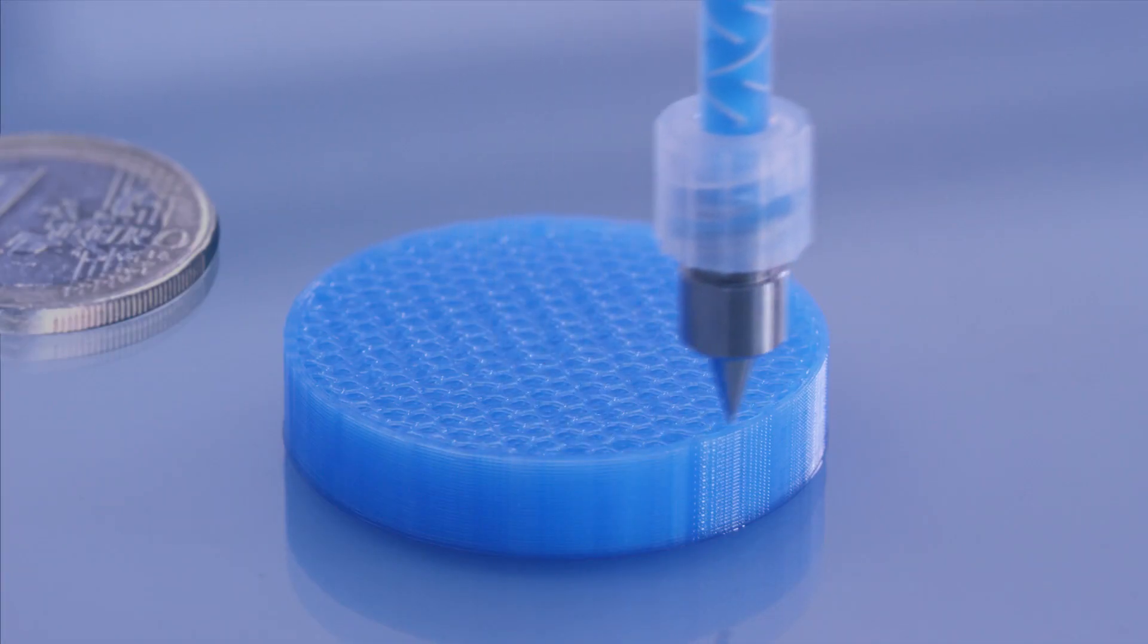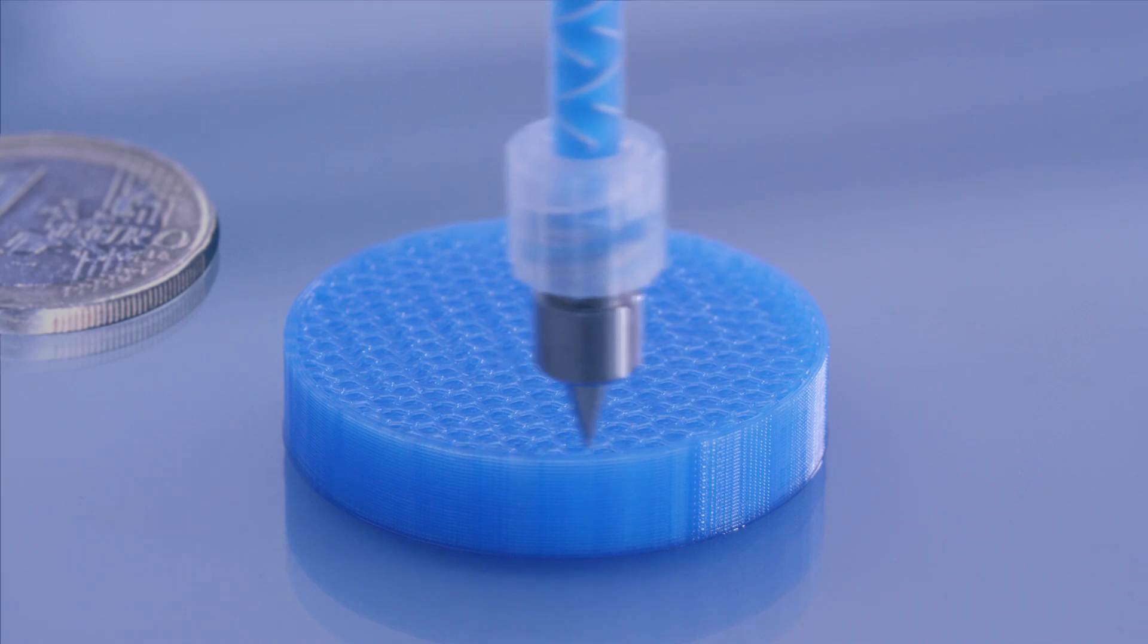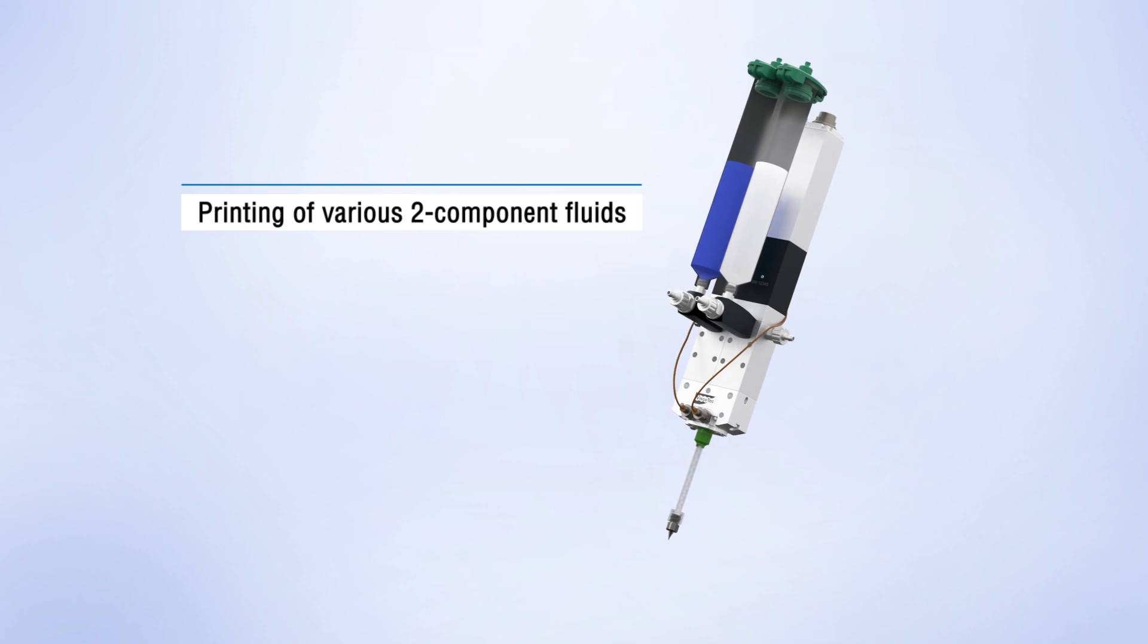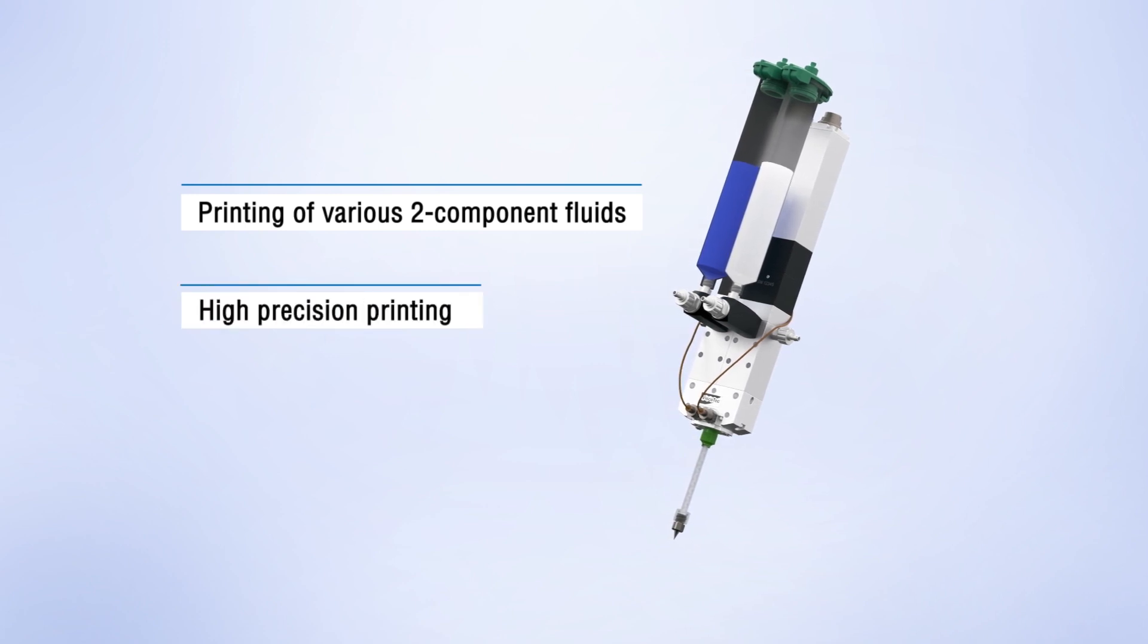The retract achieves a defined thread breakage and ensures a high quality print result. The two component printheads convince with their features: printing of various two component fluids, high precision printing, and active retract.